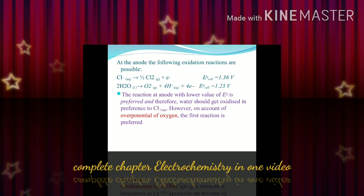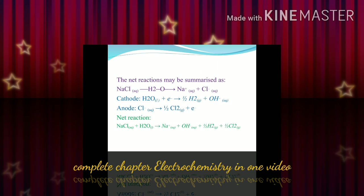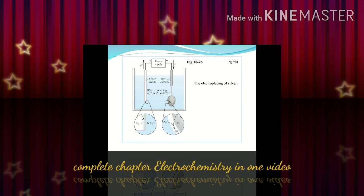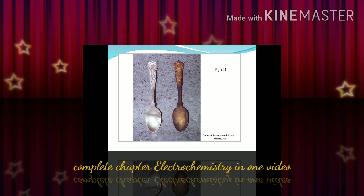The reaction that takes place at the anode and at the cathode during electrolysis of NaCl. The net reaction is summarized as: NaCl(aq) + H₂O → sodium ion + chloride ion (plus other products). This is also the electroplating of silver, as you can see.